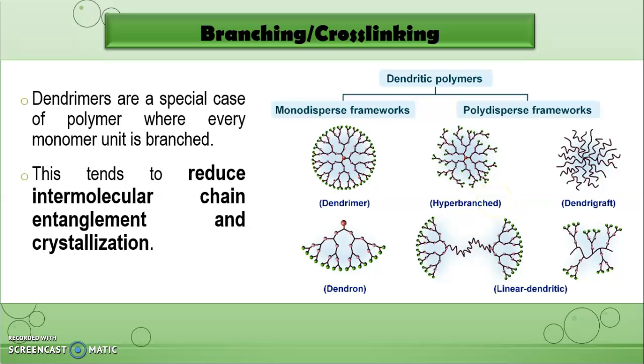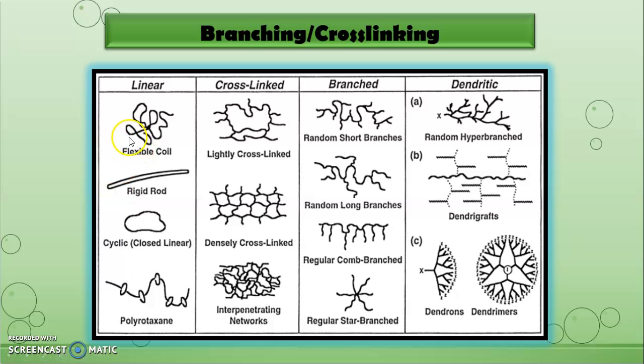Dendrimers are a special case of polymer where every monomer unit is branched. This tends to reduce intermolecular chain entanglement and crystallization. Dendritic polymers can be divided into monodispersed framework and polydispersed framework. For monodispersed framework, it can produce dendrimers which contain dendrons. For polydispersed framework, it can be categorized into hyperbranched, dendritic graph, and linear dendritic. Basically, branching or cross-linking polymer will retard crystallization.